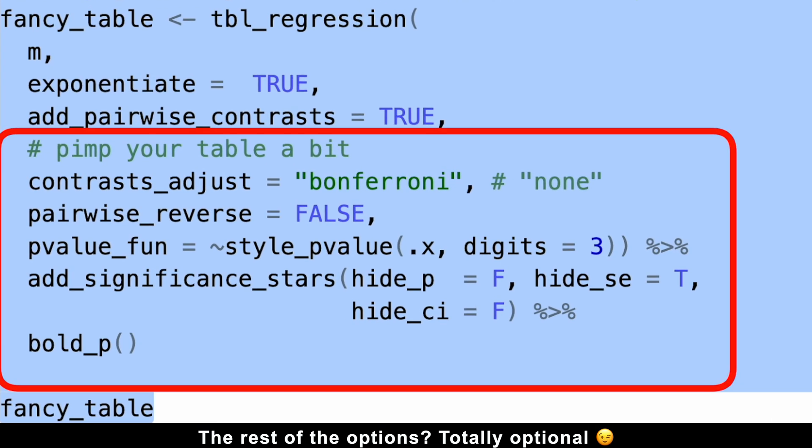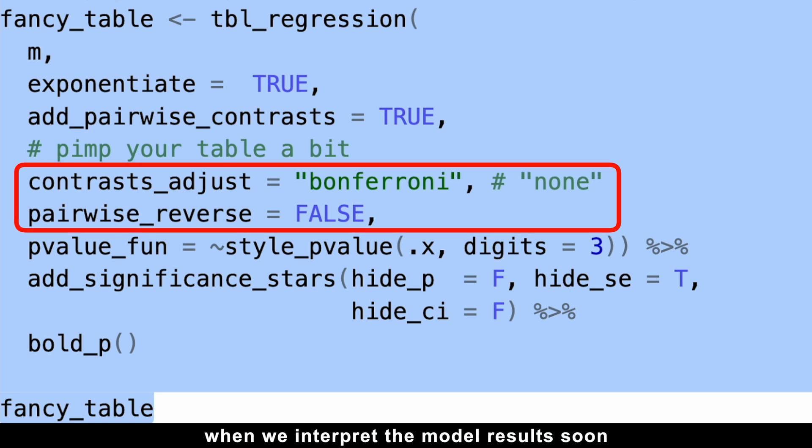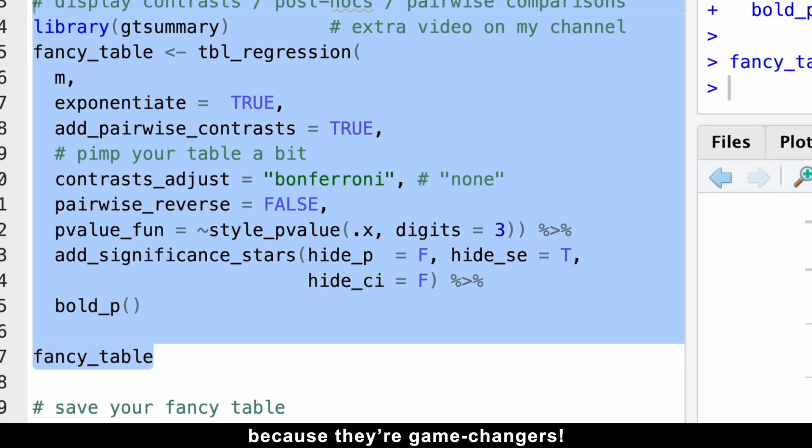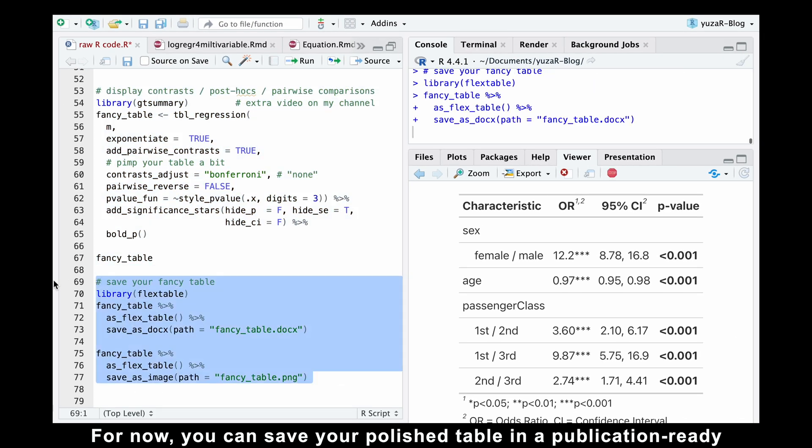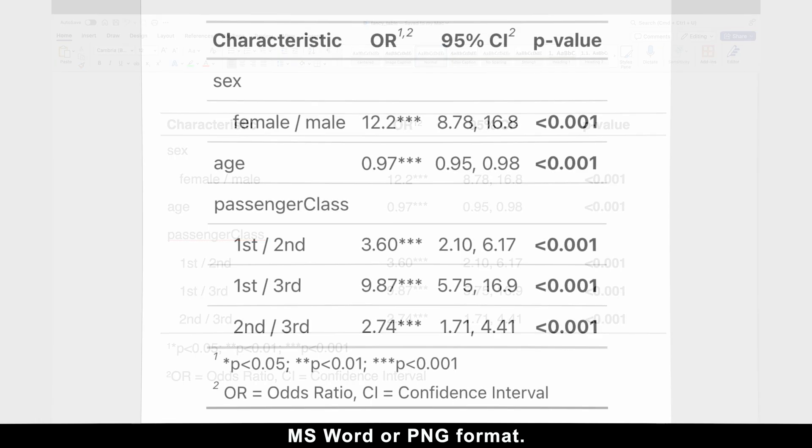The rest of the options are totally optional, but I'll dive into contrast_adjust and pairwise_reverse when we interpret the model results soon, because they're game-changers. For now, you can save your polished table in a publication-ready Microsoft Word or PNG format.